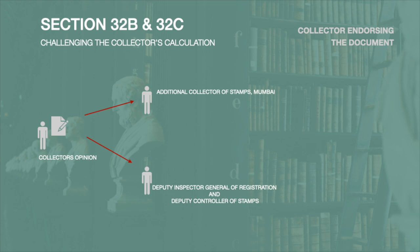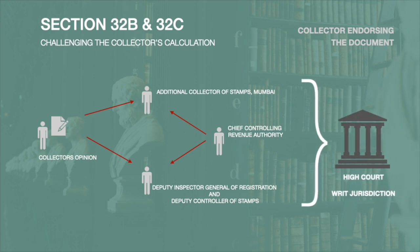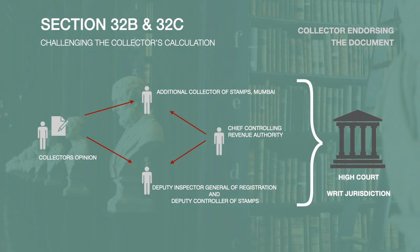However, section 32c is an exemption where the Chief Controlling Revenue Authority may suo motu call for and examine any record and pass any order as he thinks fit and proper. Besides this, an order under section 32b may also be challenged under the writ jurisdiction of the appropriate High Court.